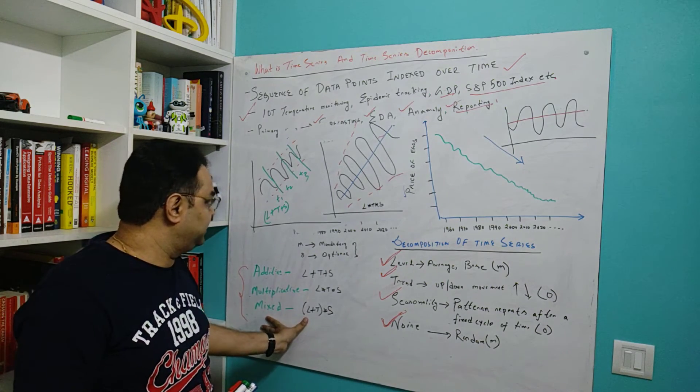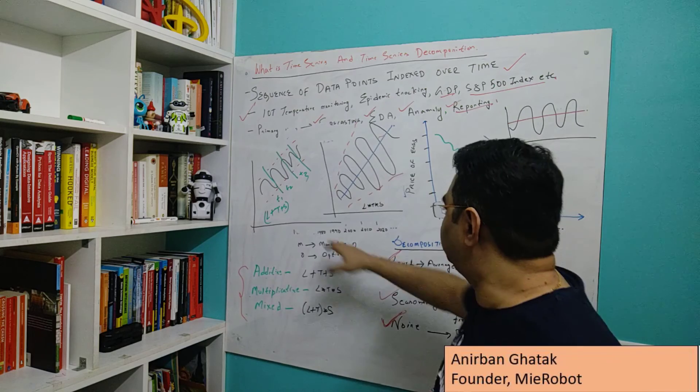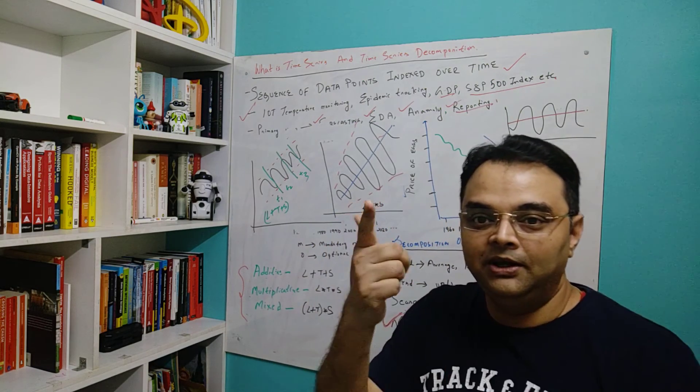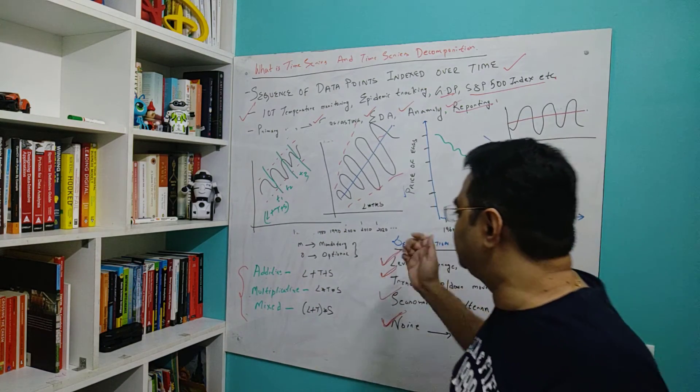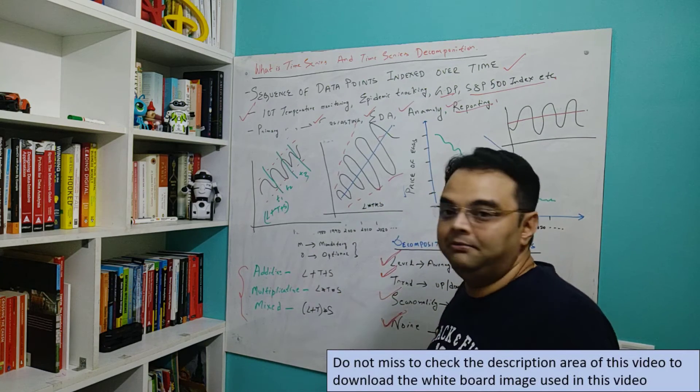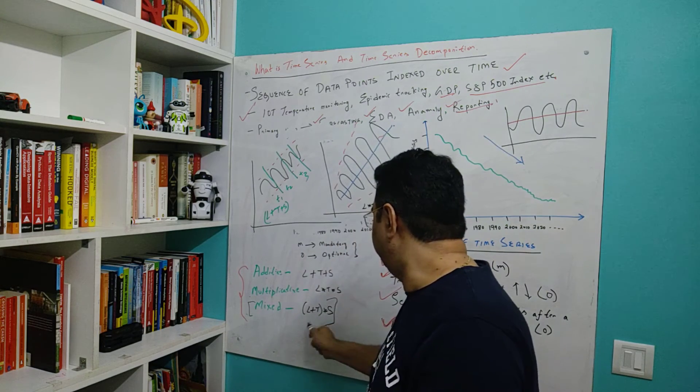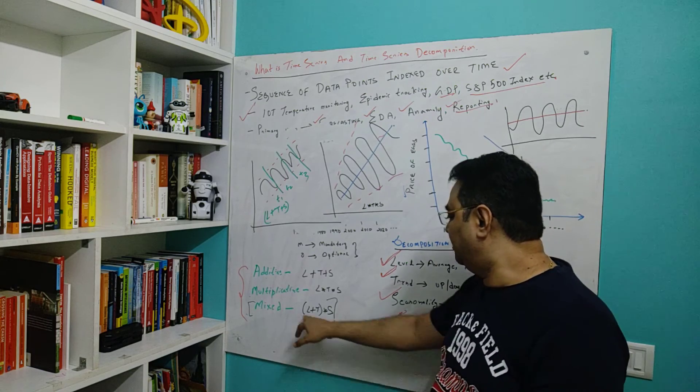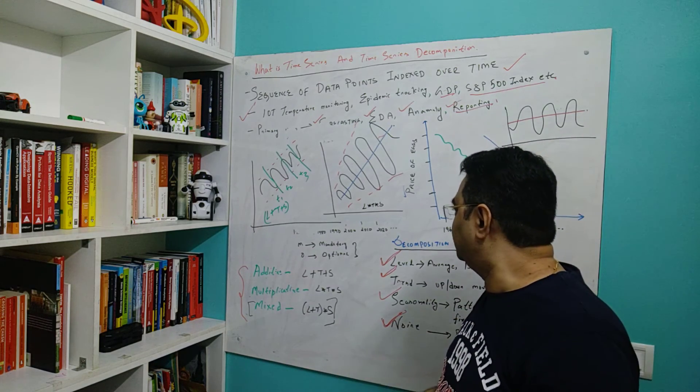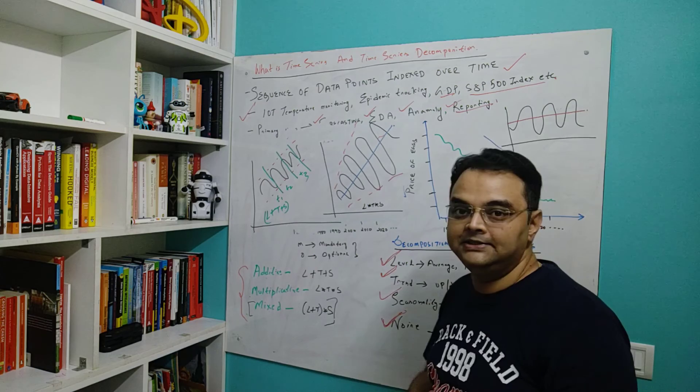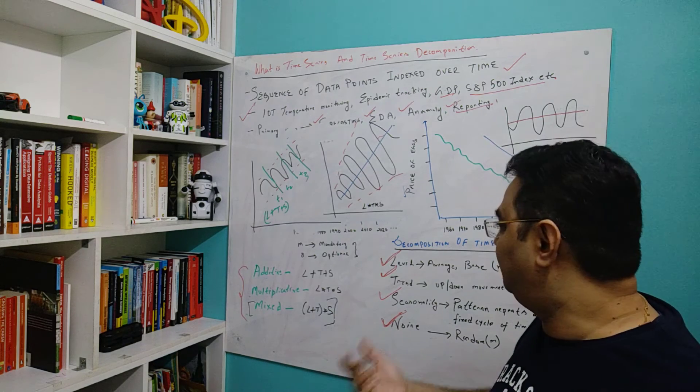This happens in most cases because the time series we find in our real work are mostly not as intrusive as these two examples which I have showed you, where you can look at it and quickly say that my time series is additive or multiplicative. Sometimes it is possible, sometimes it is better that we take the middle path and we frame a model which is like a mixed model. In a mixed model, we multiply the seasonality with the sum of level plus trend, so L plus T total into S. We'll look more into these two examples in video two, especially for additive and multiplicative time series.